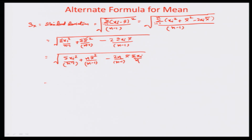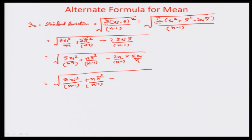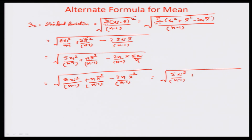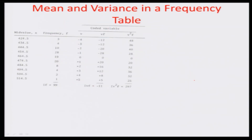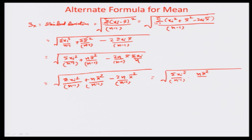This can further be represented as the root of sigma x_i squared by n minus 1, plus n x-bar squared by n minus 1, minus twice n over n minus 1. This is actually x-bar squared. Eventually we can represent this whole thing as sigma x_i squared by n minus 1, minus n x-bar squared over n minus 1.